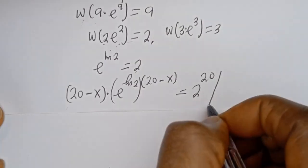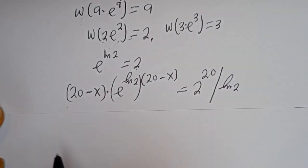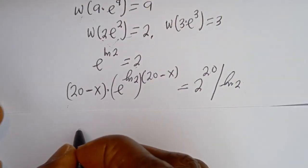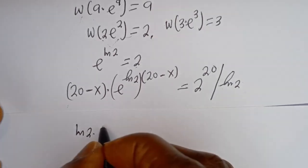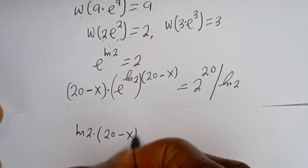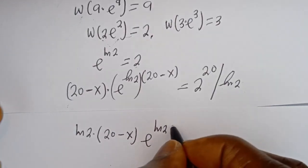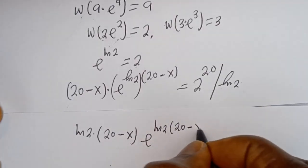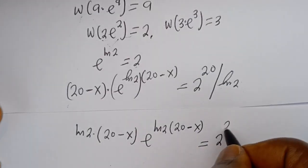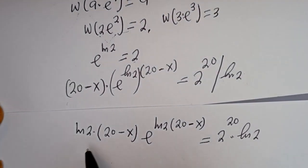Now let's multiply through by ln of 2. Then this becomes: ln of 2 multiplied by 20 minus x, multiplied by e to the power of ln of 2 times bracket 20 minus x, is equal to 2 to the power of 20 multiplied by ln of 2.